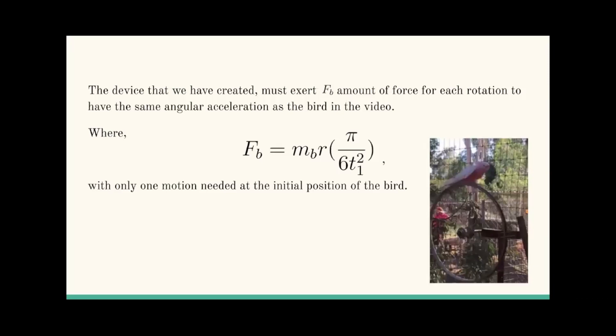In conclusion, the device that we have created must exert F_b amount of force for each rotation to have the same angular acceleration as the bird in the video, where F_b = m_b r π/(6t_1²), with only one motion needed at the initial position of the bird. Thank you.